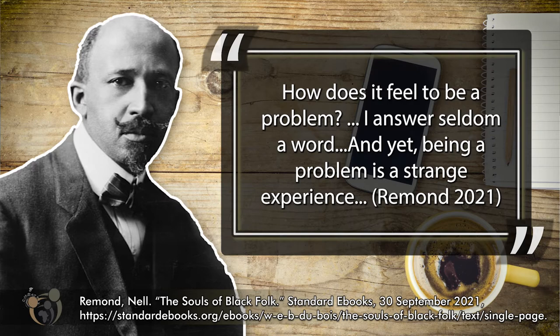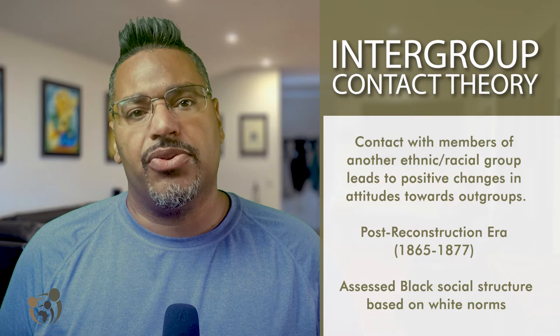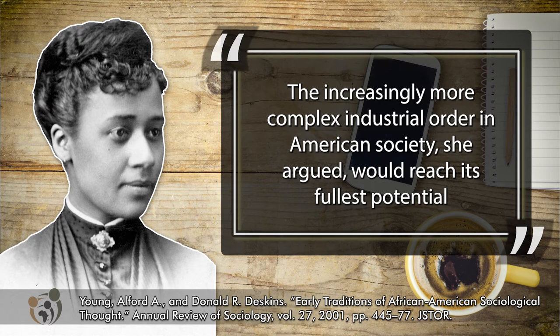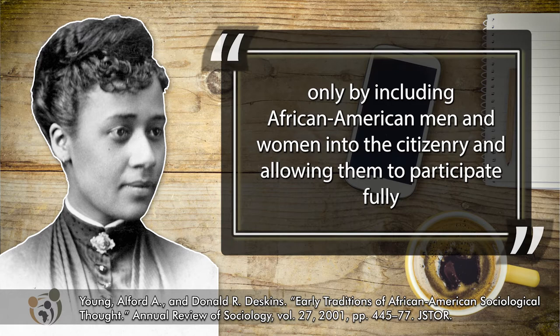Another prominent social thinker, Anna Julia Cooper, was an American educator, writer, and activist who promoted Black women's education in the United States. She wrote about the history of African Americans and their contributions to society. Much like Du Bois, she stressed inclusion as a pathway to prosperity. The increasingly more complex industrial order in American society, she argued, would reach its fullest potential only by including African American men and women into the citizenry and allowing them to participate fully in social, political, and economic realms of life.